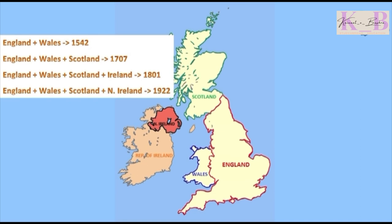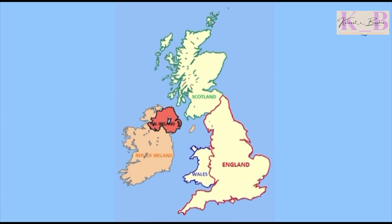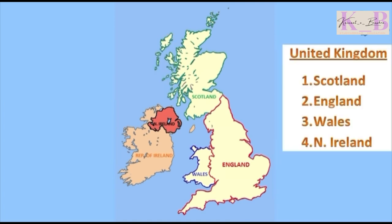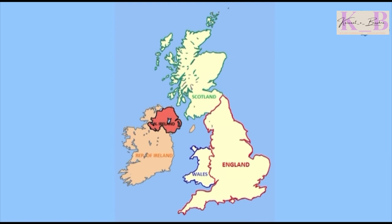Later on, Ireland also joined in 1801. But in 1922, the major portion of Ireland got separated — that portion was the Republic of Ireland. Therefore, at present the United Kingdom has four countries: Scotland, England, Wales, and Northern Ireland.